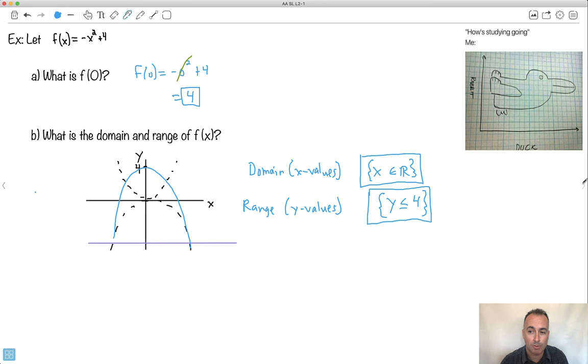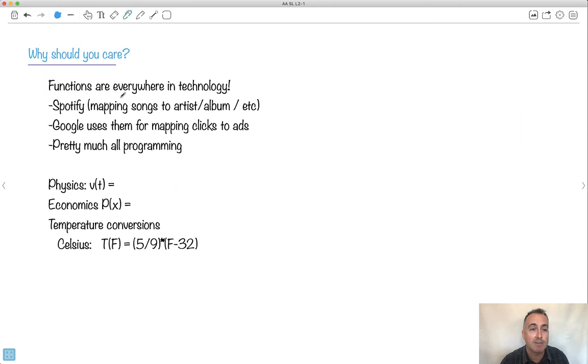I hope that helps you understand domain and range. And why should you care? Well, functions are everywhere. Spotify uses them for mapping songs, artists, albums. Google uses it for mapping clicks to ads. You know, they always want to sell you stuff. Pretty much all programming uses this. In physics, we have things like V of T, A of T. We have tons of things in physics. Economics, like profit versus amount of units sold. Let's say you want to convert from Fahrenheit to Celsius. The temperature as a function of F could be just 5 ninths times F minus 32. So if you put in 32 Fahrenheit, well, 32 minus 32 is 0. And that's why it's 0 degrees Celsius. And you can see that, hey, they meet. So there's lots of places where we meet functions.